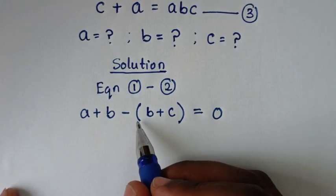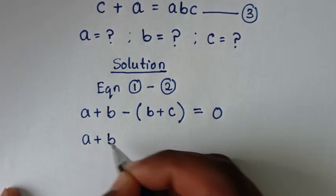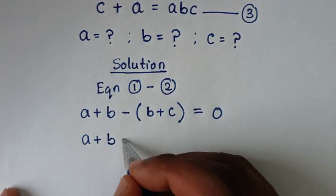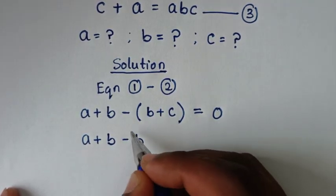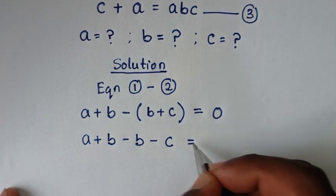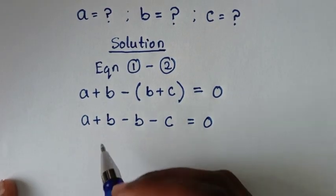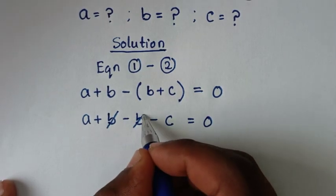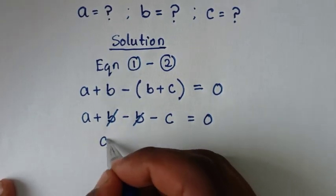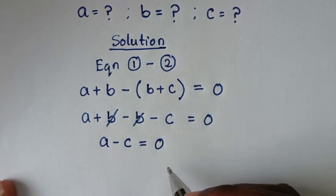Then from here, we'll open this bracket. So it will be a plus b, and distributing the negative gives minus b minus c, equal to 0. Then b minus b cancels, so it will be a minus c is equal to 0.